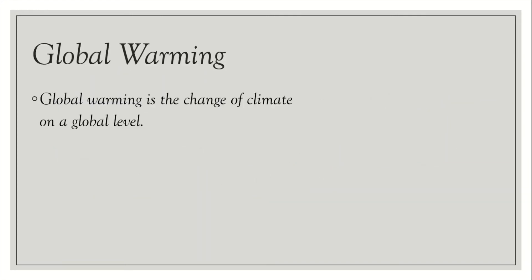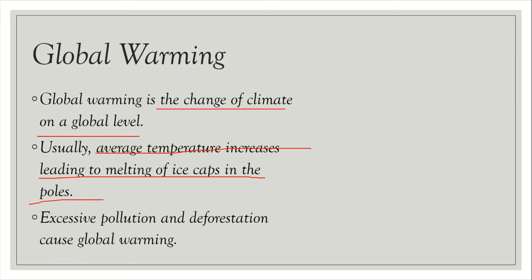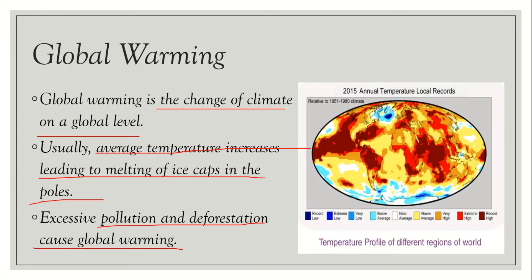Global warming is the change of climate on a global level. Usually average temperature increases, leading to melting of ice caps at the poles. Excessive pollution and deforestation cause global warming. Here is a picture of 2015 annual temperature records of global warming.